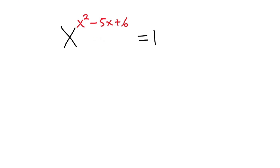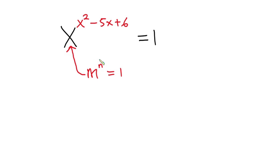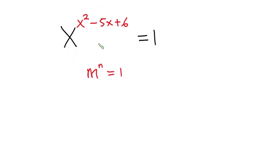First of all, I'll rewrite this problem in the form m to the power n is equal to 1. So this means that m is equal to x, and n is equal to the whole of this exponent. So what are some of the conditions that will make this equation true?